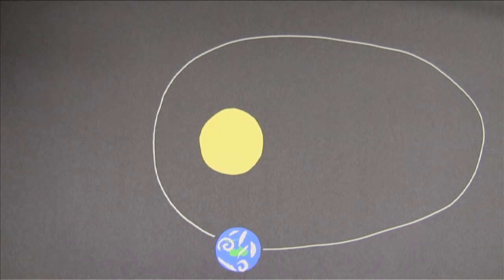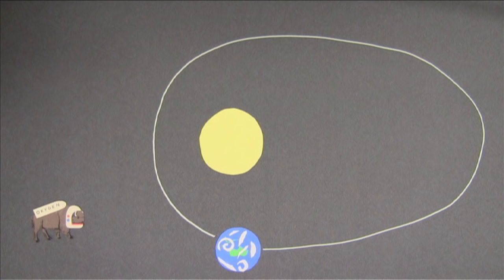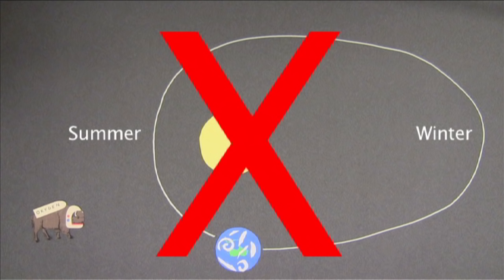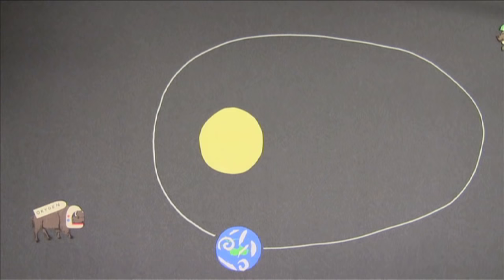Lots of people think, Hey, this must be why we have seasons. When the Earth is close to the Sun, we have summer. And when the Earth is far away from the Sun, we have winter. But that's actually not true. If that were true, it would be summer in America and Australia at the same time. And we know that's not the case.